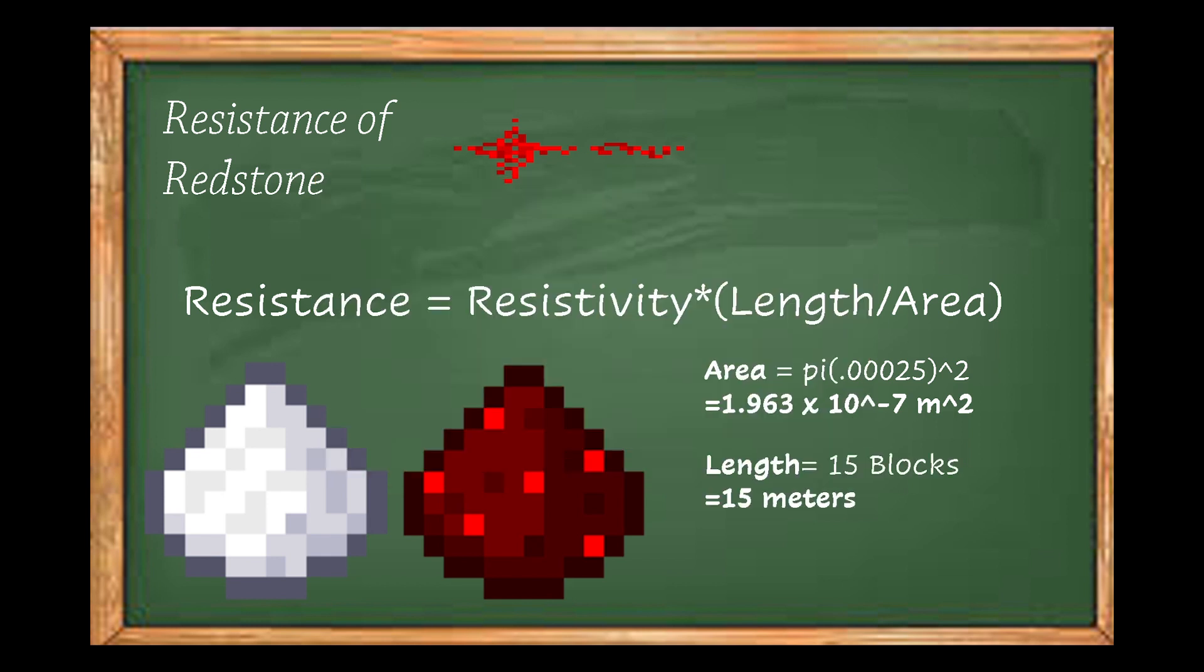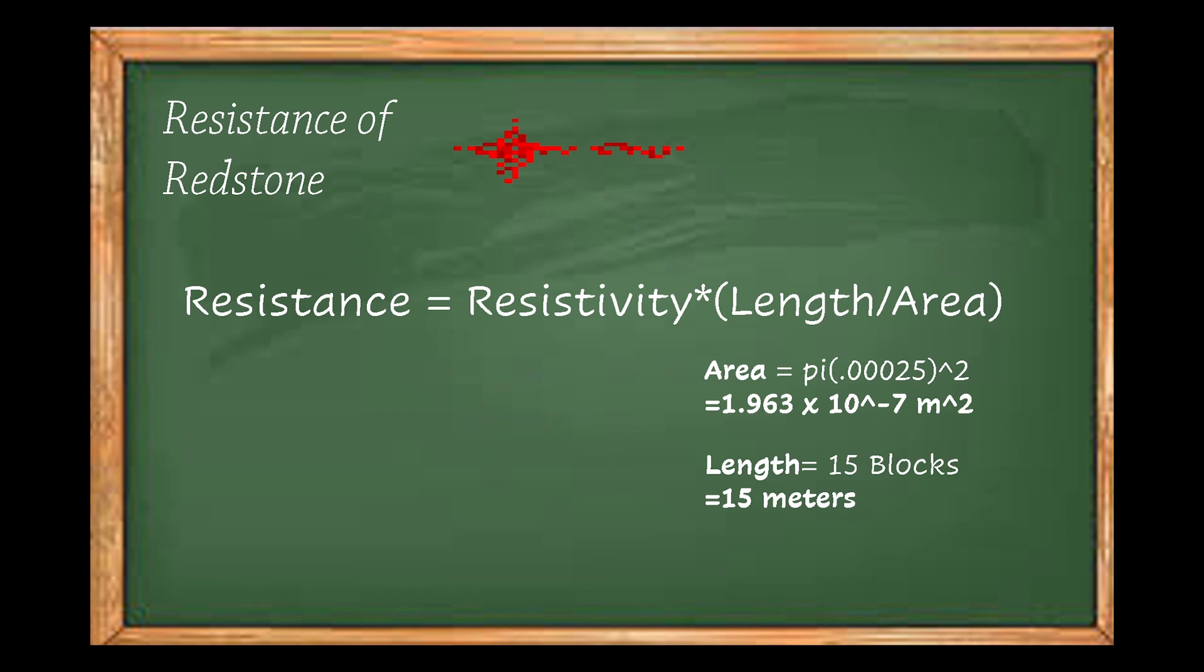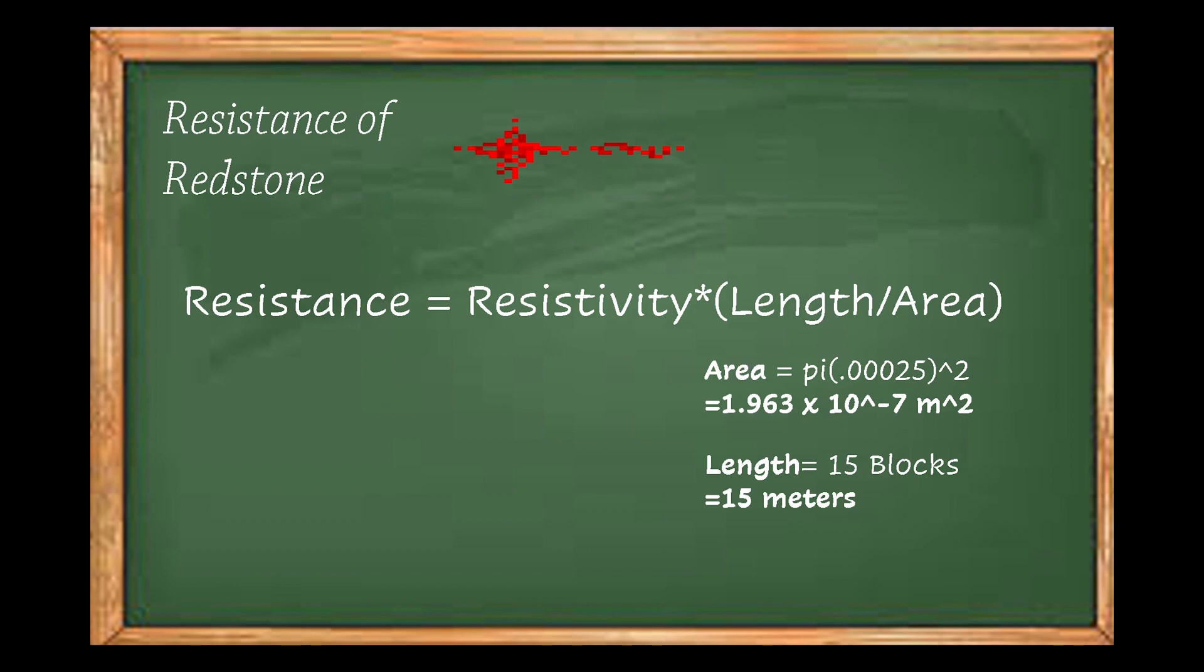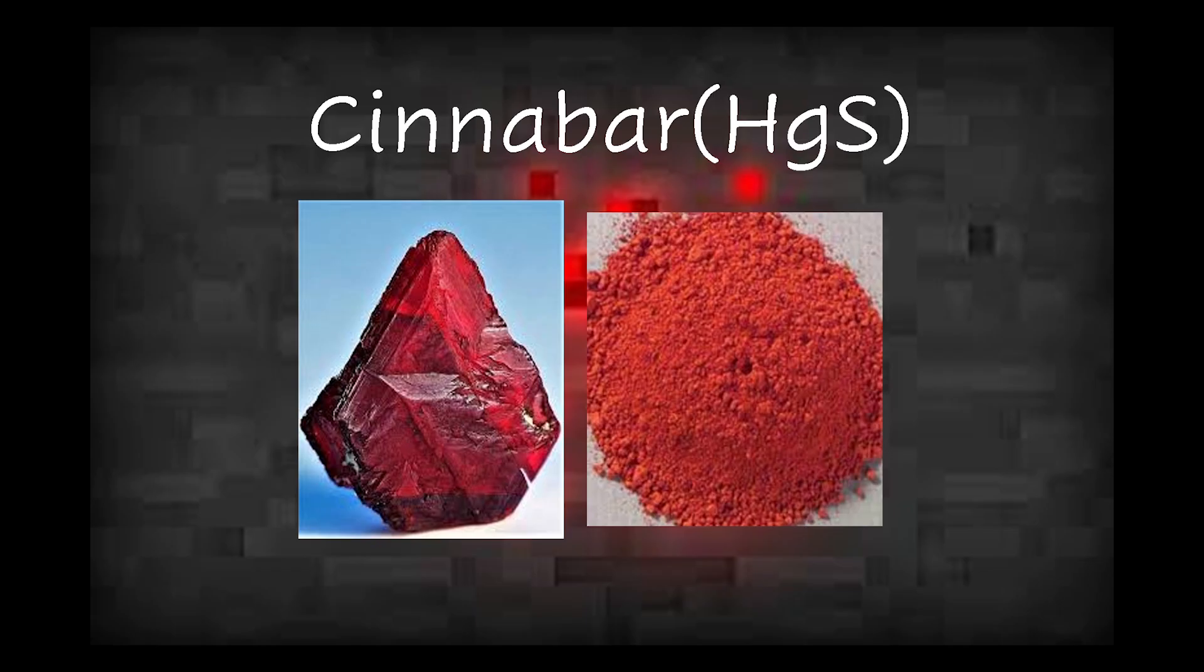The last thing we need for resistance is the resistivity coefficient. Now here we have to consider a material that is close in color and luster, that is the shine of material. The closest one I could find was something called cinnabar, a mercury sulfide material with a resistivity coefficient of 2 times 10 to the 7th.